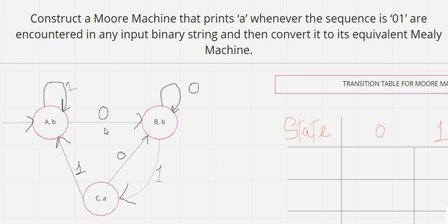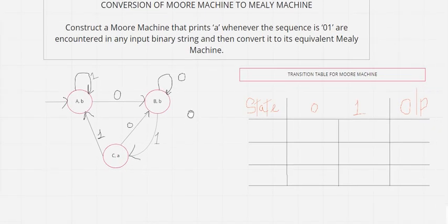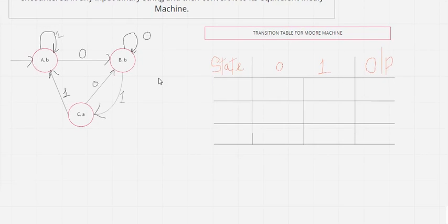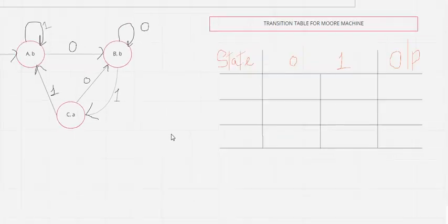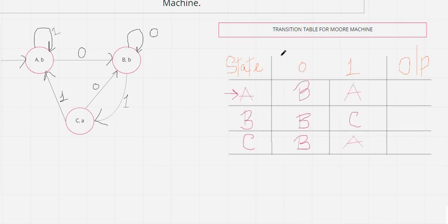Now, I hadn't shown the state transition table for a Moore machine or Mealy machine earlier. We will look into the state transition table as well. Looking at the table, the state transition table will consist of columns for all states, inputs, and the corresponding output for each state. We have three states, so I have already prepared the table.